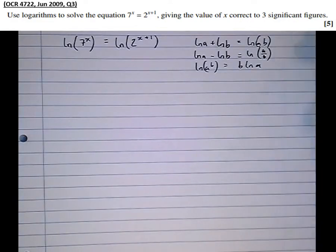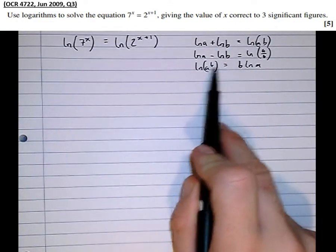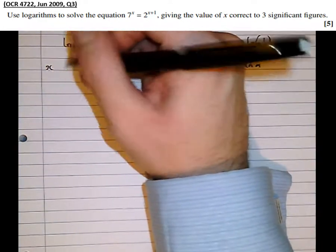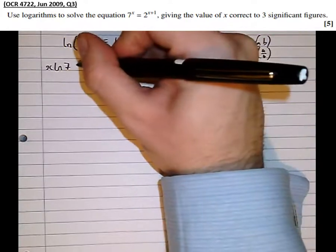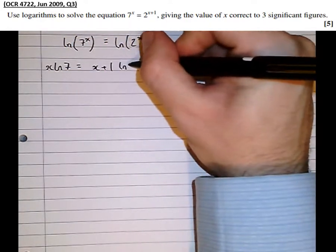So we can see here that the third rule is the one that applies. We've got powers that we can bring to the front. So x log 7 equals x plus 1 log 2.